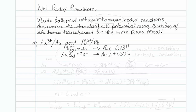Because we want to have spontaneous redox reactions, it is important that we have the more positive pair be the cathode and the more negative pair be the anode. Reduction occurs at the cathode and oxidation occurs at the anode. So essentially I need to take the top reaction and turn it around.